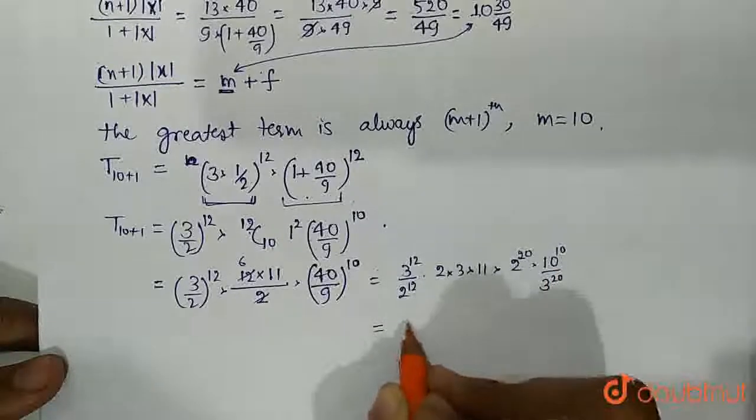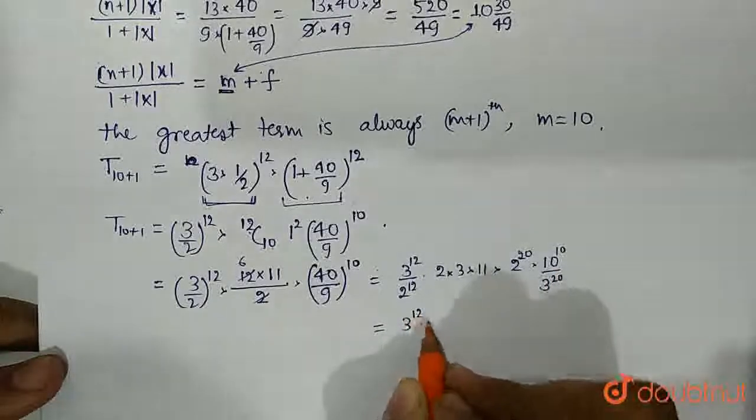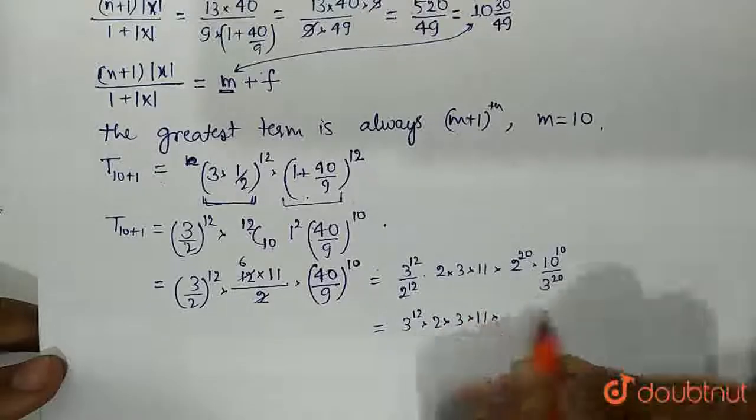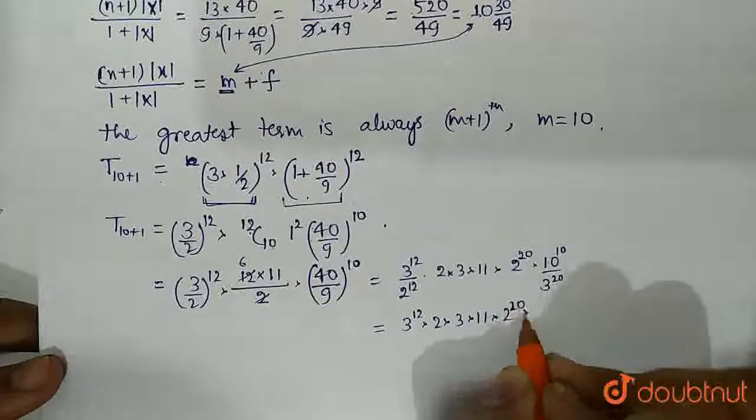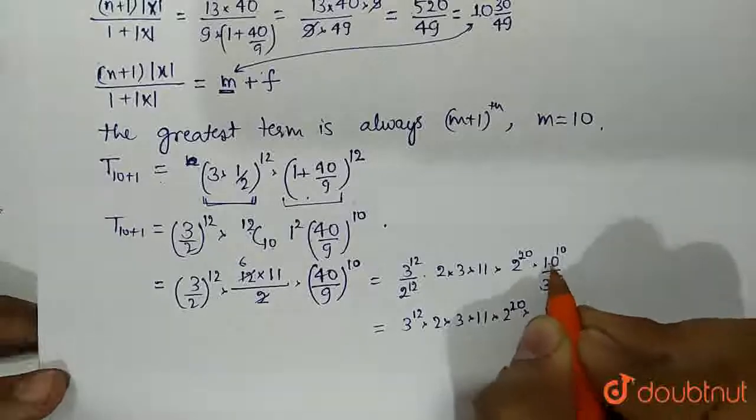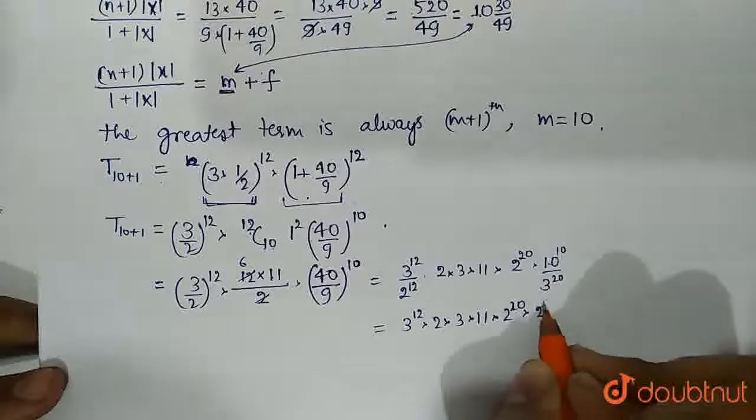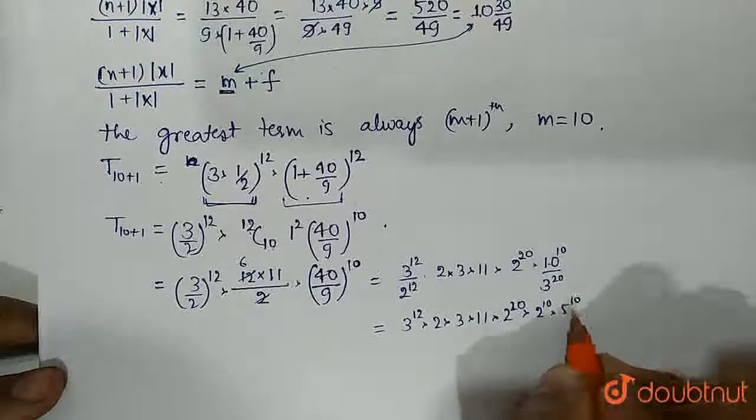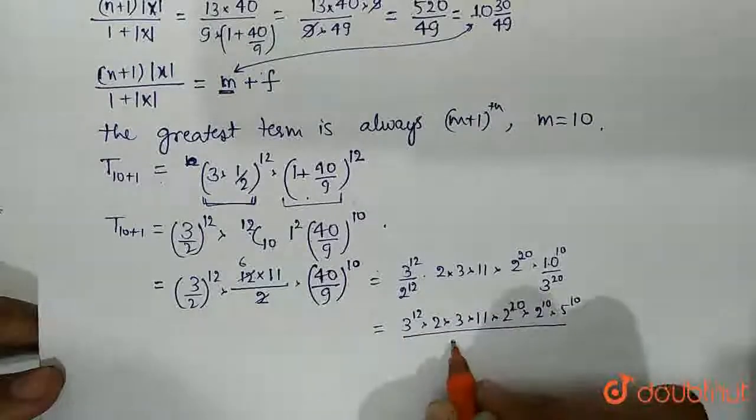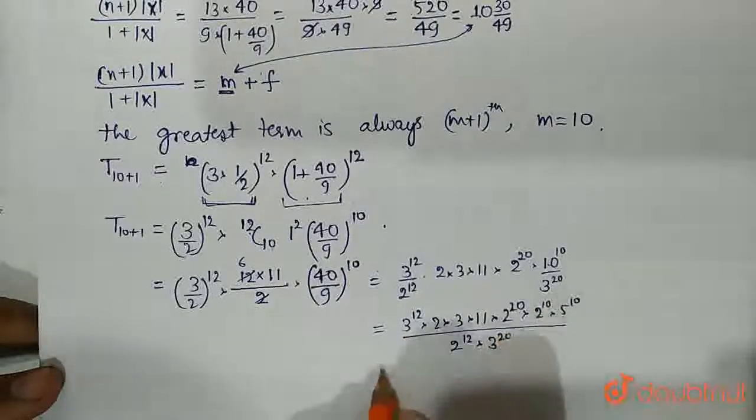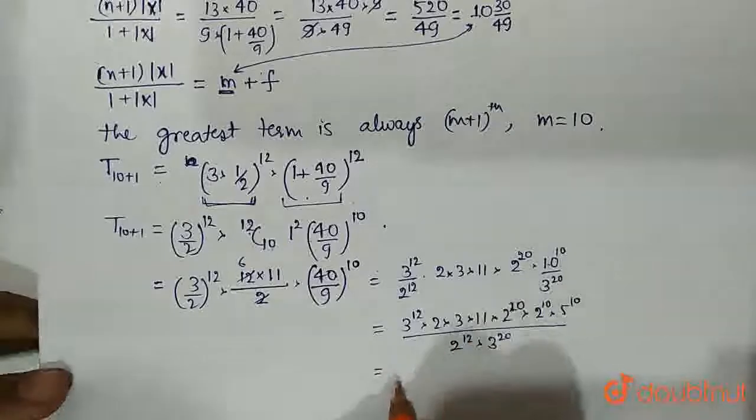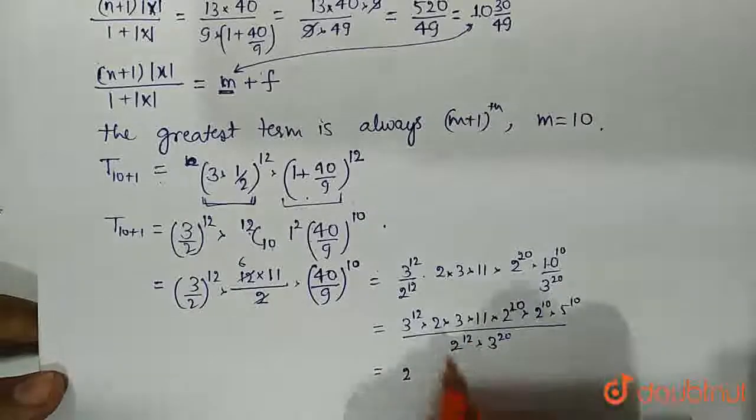And further 10 can be written as 3 raised to the power 12 into 2 to 3 into 11 into 2 raised to the power 20 into 10 can be written as 2 times 5, so 2 raised to the power 10, 5 raised to the power 10 upon 2 raised to the power 12 into 3 raised to the power 20.